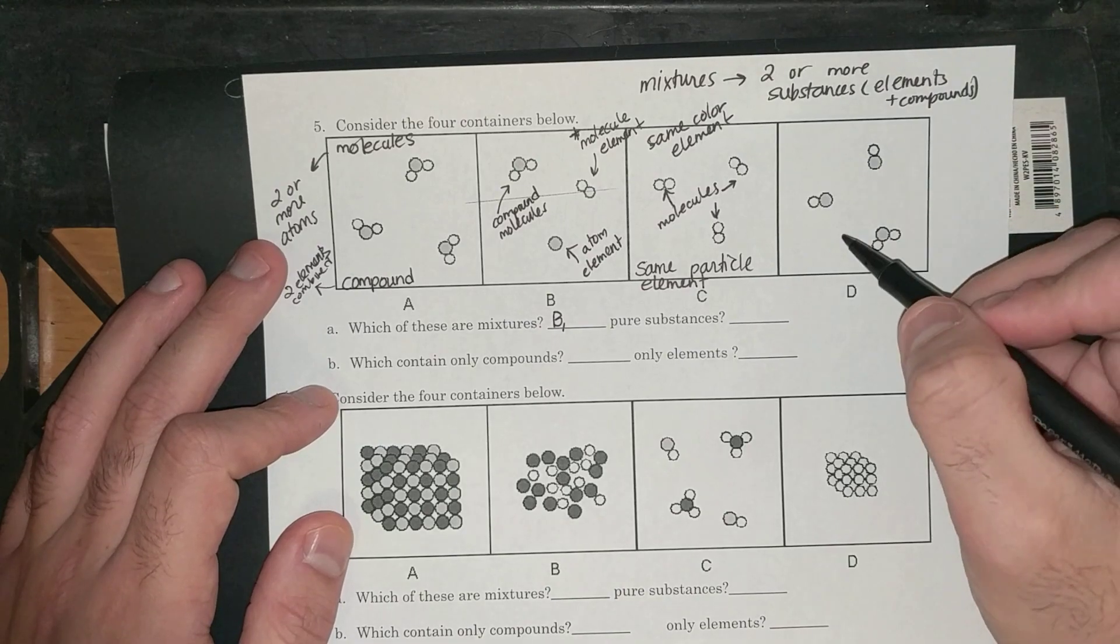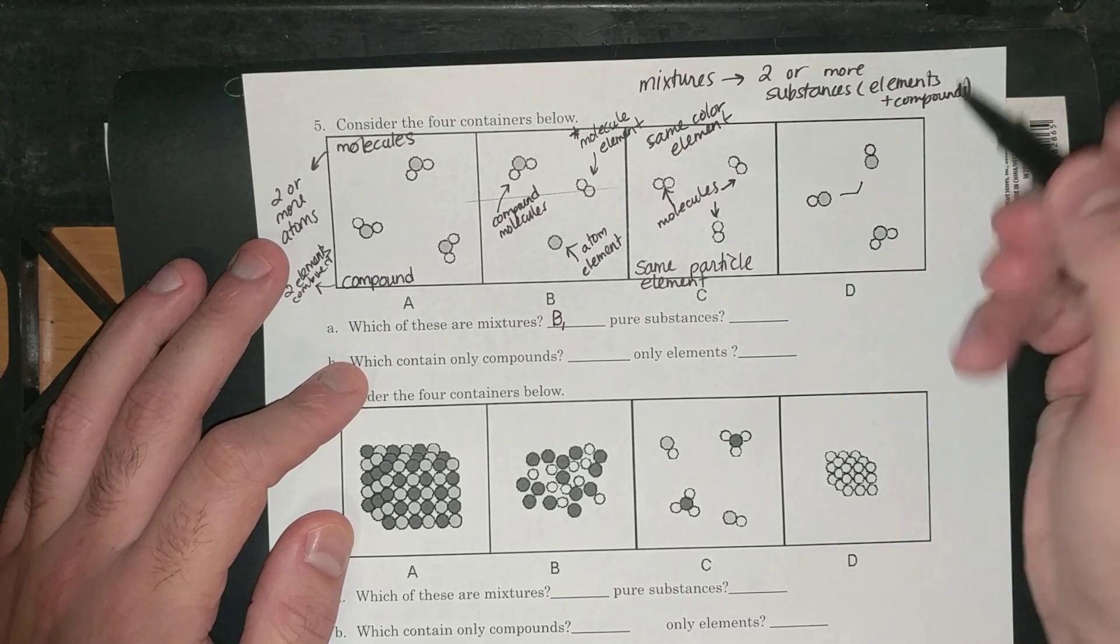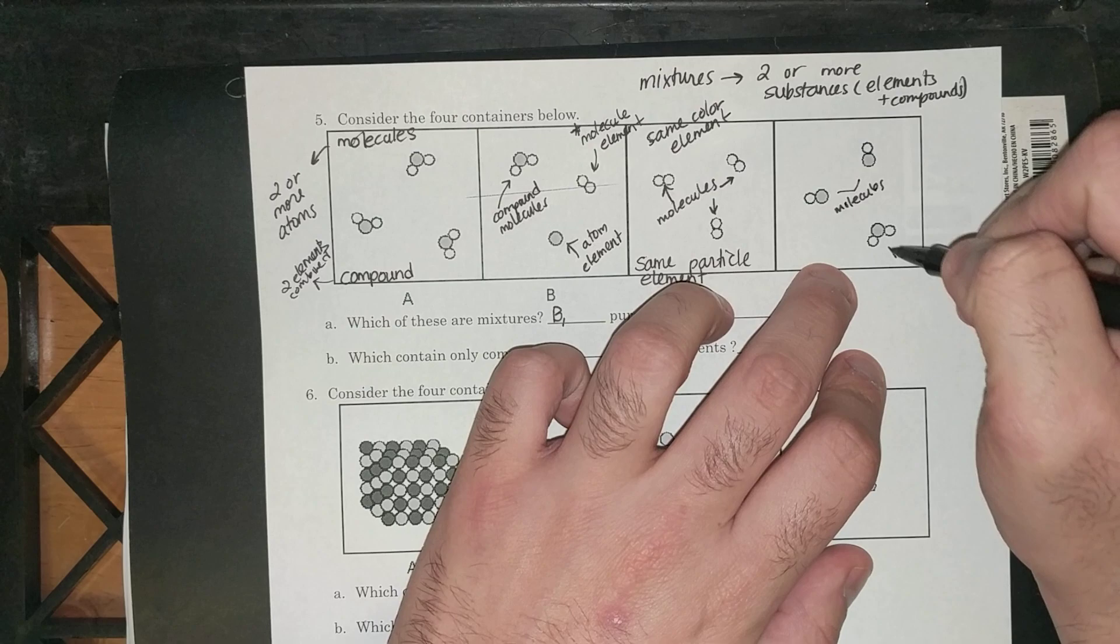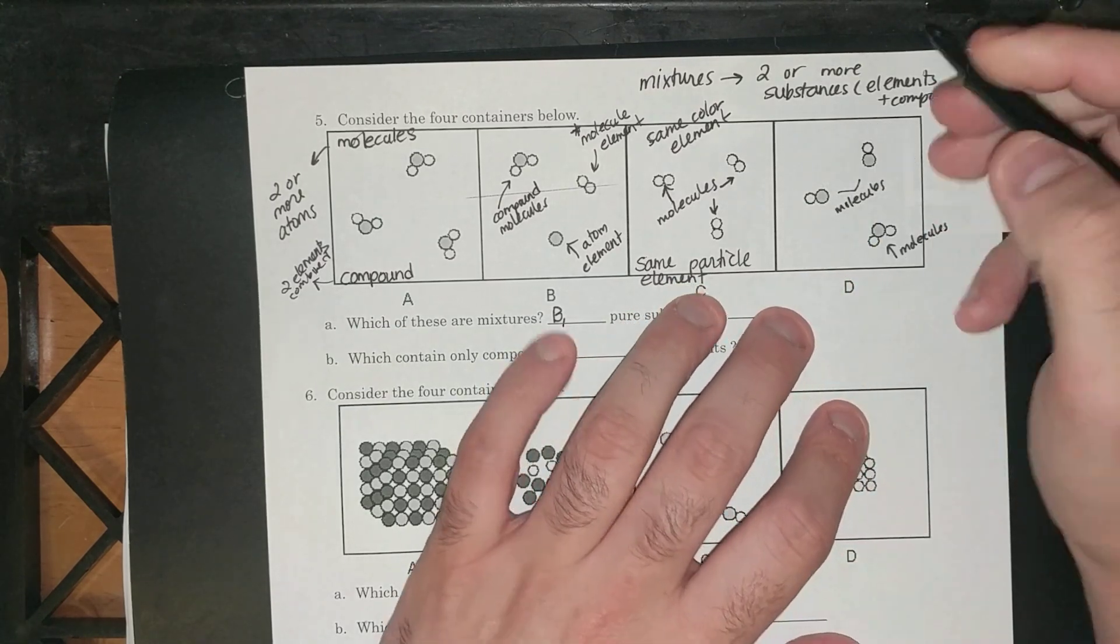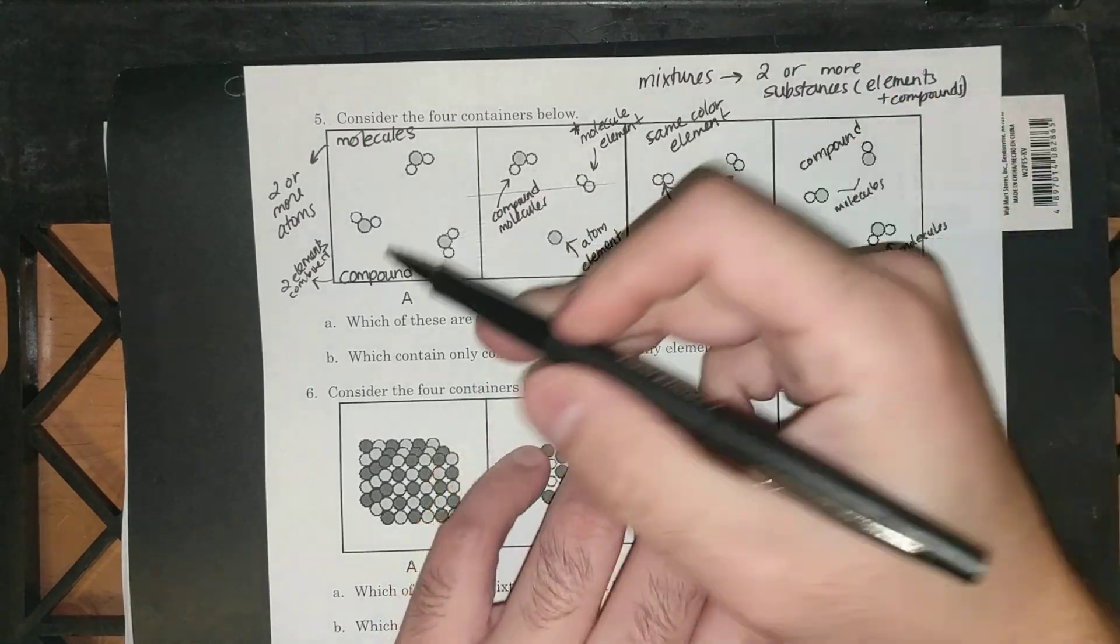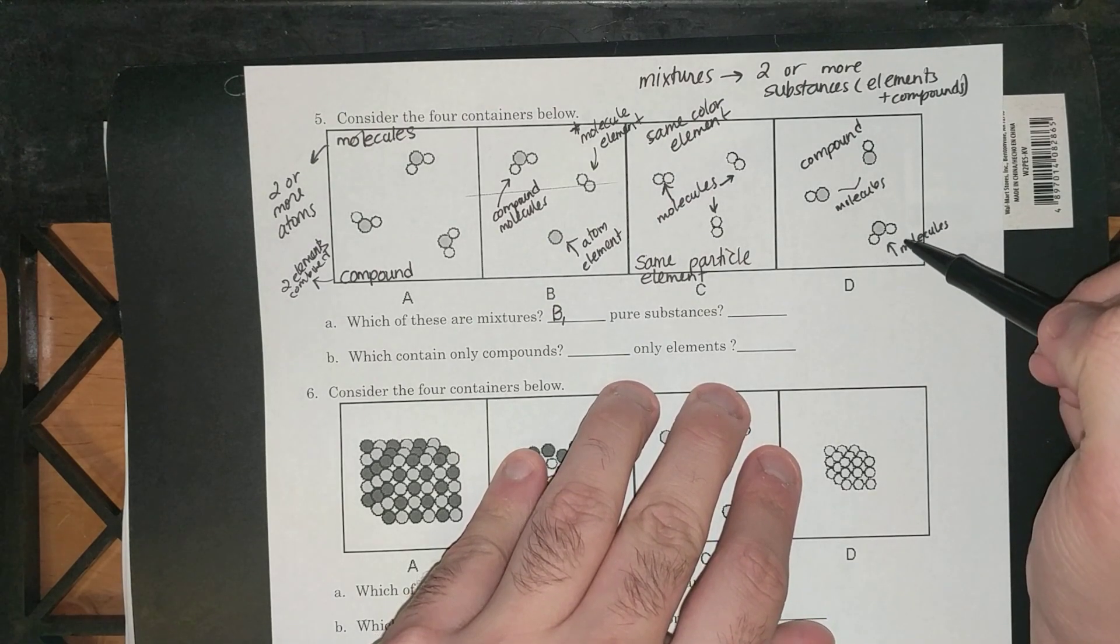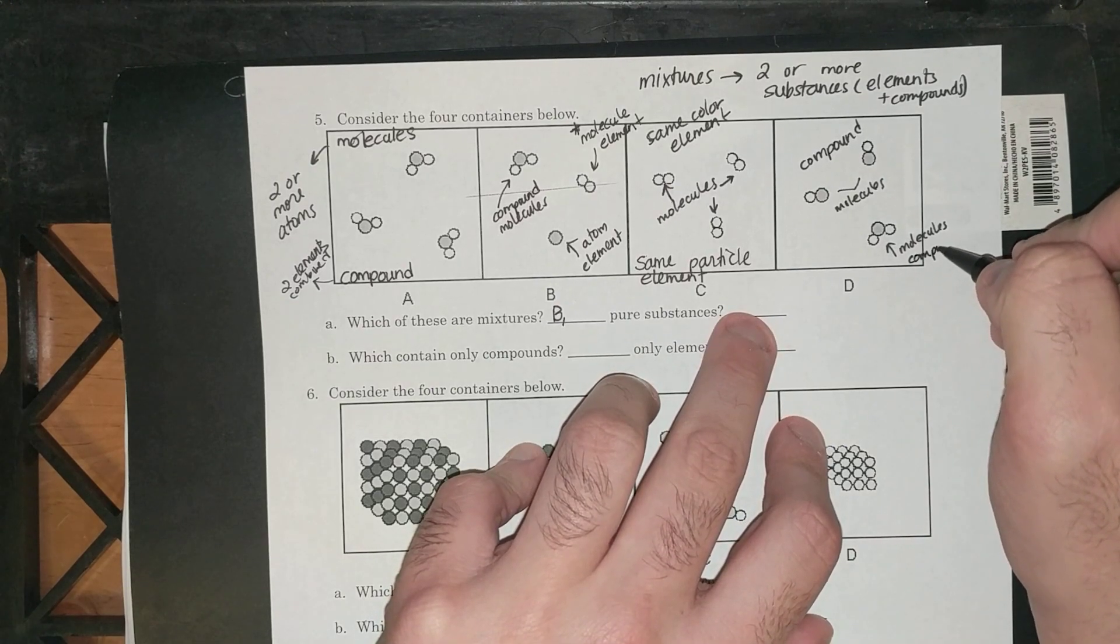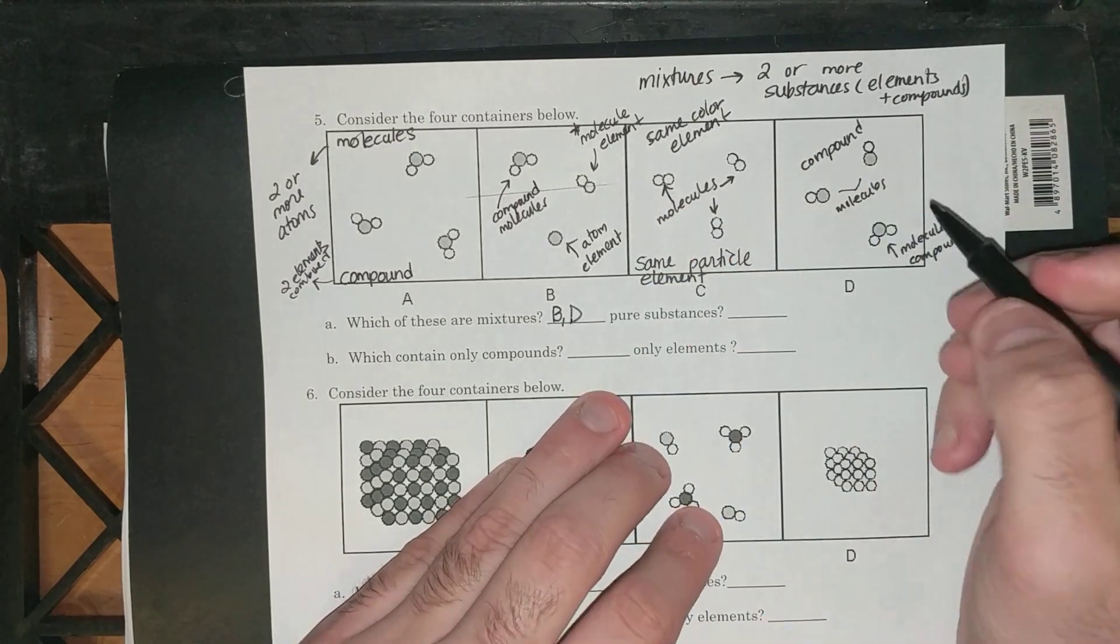And then finally, in the last box, I have, looks like two different types of molecules here. I have these two molecules. They look the same. But then I have this molecule. So this is a different compound. Well, I know this is a compound. There's two different colors that are combined. Two elements combined makes a compound. And this is three different atoms, two different colors, of course, but three of them. There's another molecule of a compound. Two different ones makes this a mixture. So D is also a mixture.